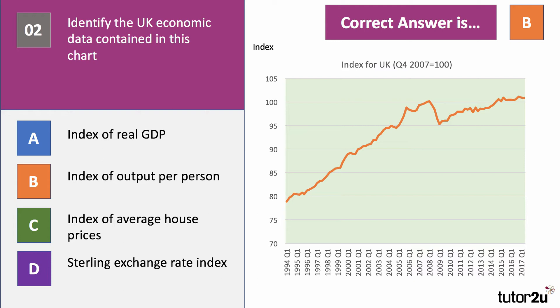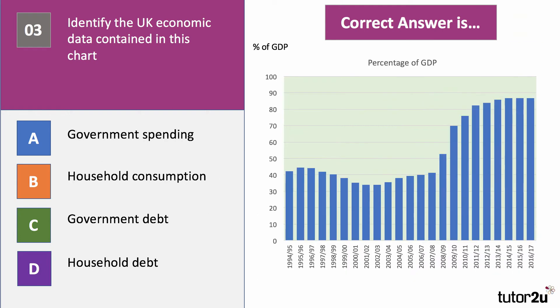Question number three — chart number three. Identify the UK economic data contained in this chart. Is it government spending, household consumption, government debt, or household debt? The data in the chart is expressed as a percentage of GDP. What do you think? Have a go.